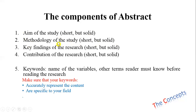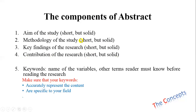After the aim, describe your methodology in a few lines — short but solid, two to three lines — but try to explain as much as possible. The next part is the key findings of your research: brief sentences that tell the reader what you actually found. The fourth part is the contribution of the research — how your research contributes to the body of literature in your area. These are the four essential parts of the abstract that you need to write.